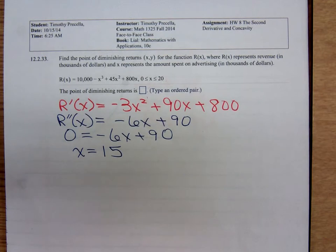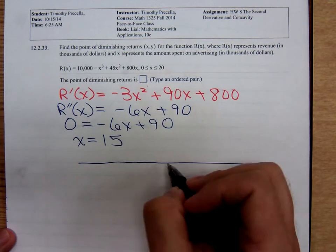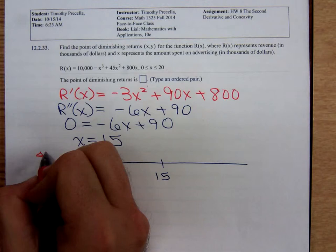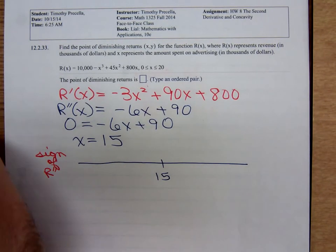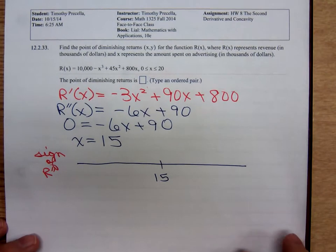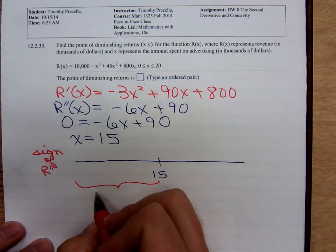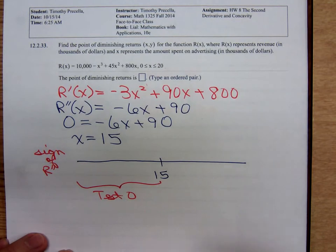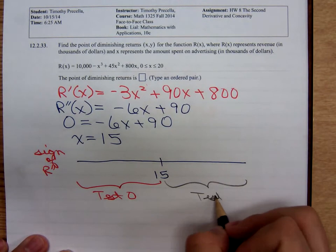So, let's show that at x equals 15, we have a point of diminishing returns. Here's 15. The sign of R double prime. To the left of 15, I'll test 0. The smallest sensible value you can test. And, to the right of 15, I'll test 20.